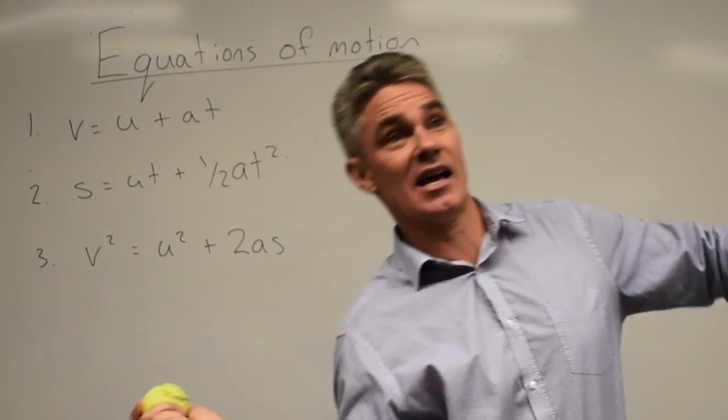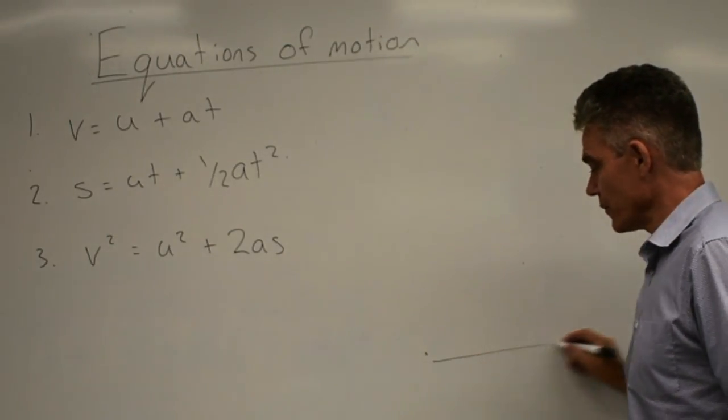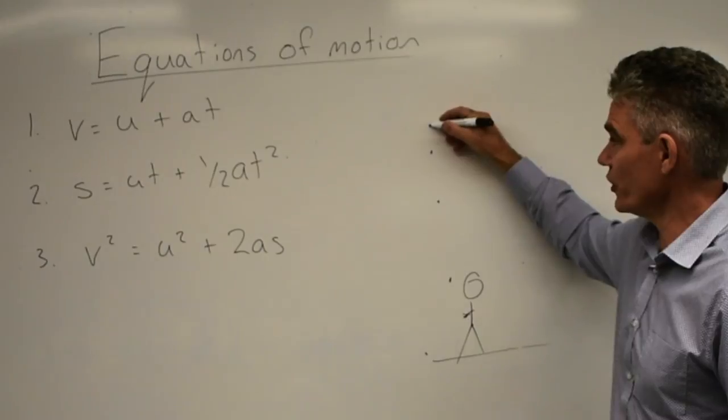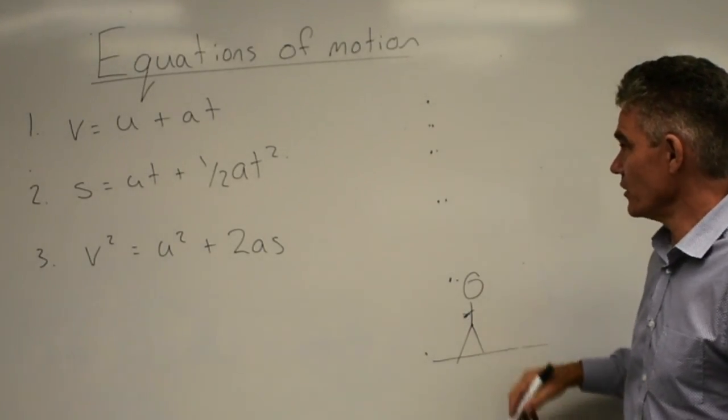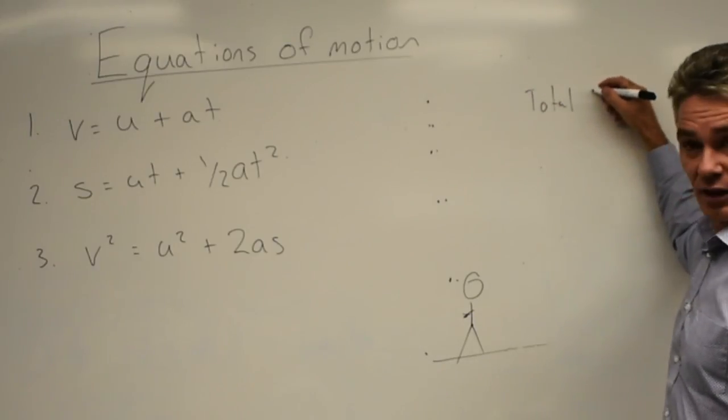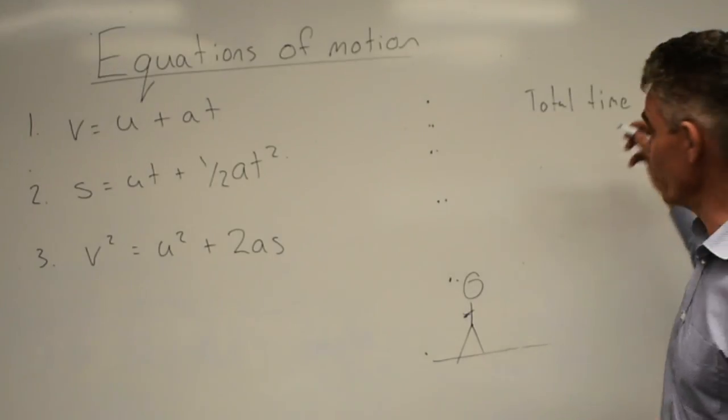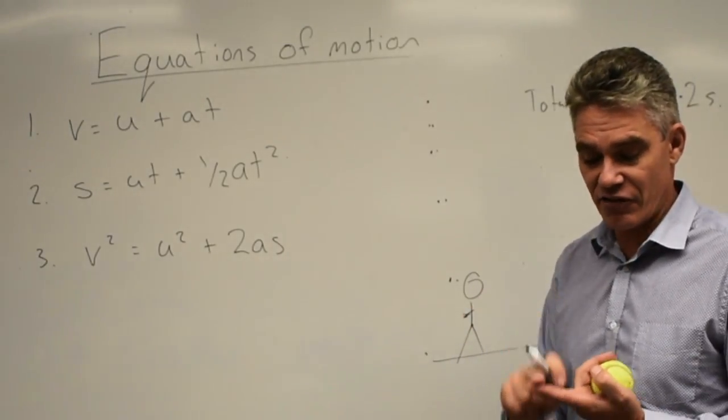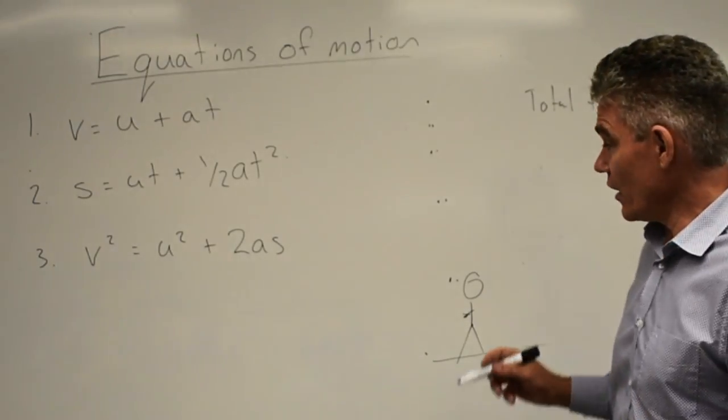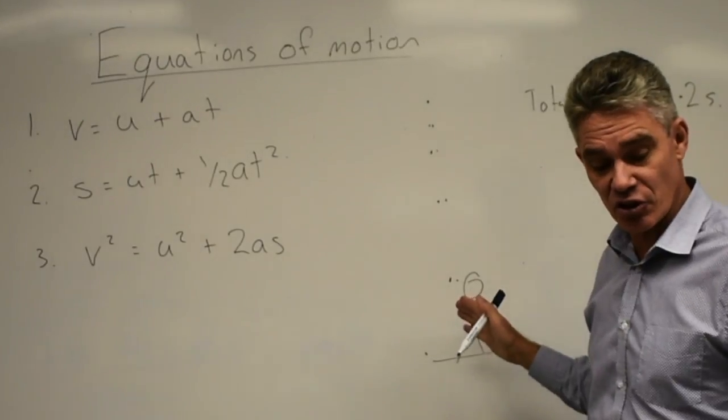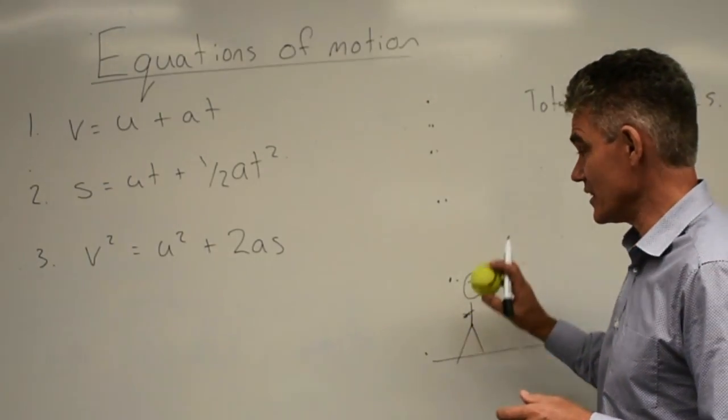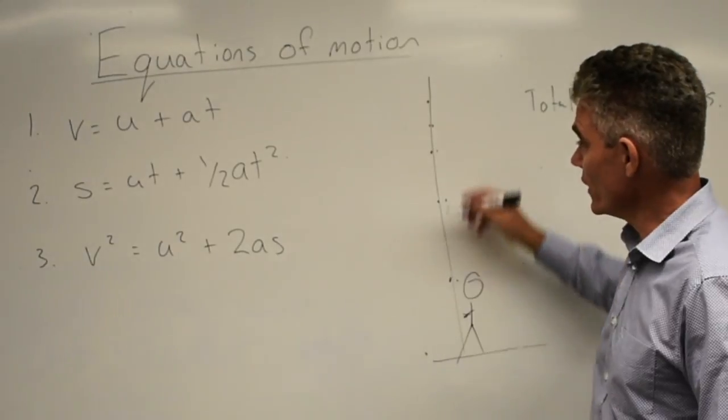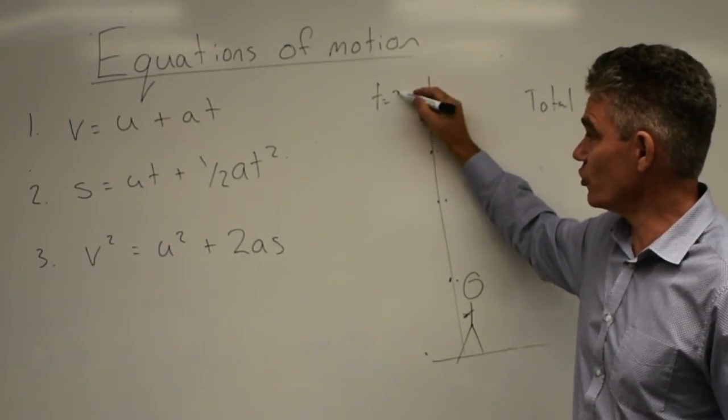And typically, if it's to do with falling objects, the acceleration is going to be 9.8 metres per second per second. I went outside with the students and they had to throw a ball as hard as they could up into the air. And so they stood here. And so one of them, one student threw it. And then the other student timed how long it took to go up and then to come down. And so they got a total time. And one student got 4.2 seconds. What they could then solve is how fast did they actually throw the ball and how high did it go.